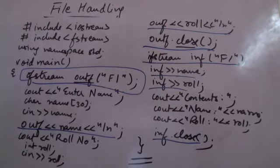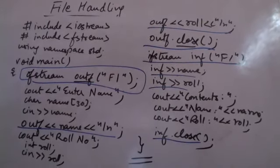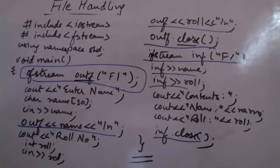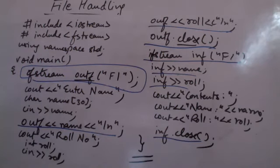So you have created an ofstream object, opened a file using the constructor, written name and roll number, closed the file, then opened the same file in ifstream for reading, read the contents, printed them, and closed the file. That's what we do in C++ — just in the form of C++ syntax. Is everything clear so far?